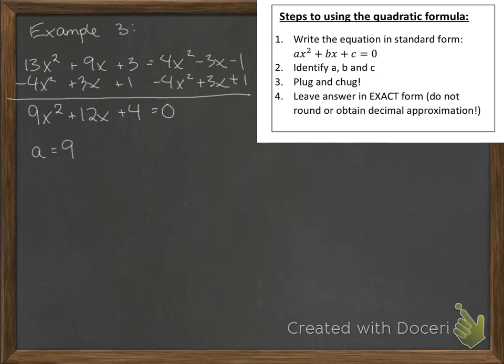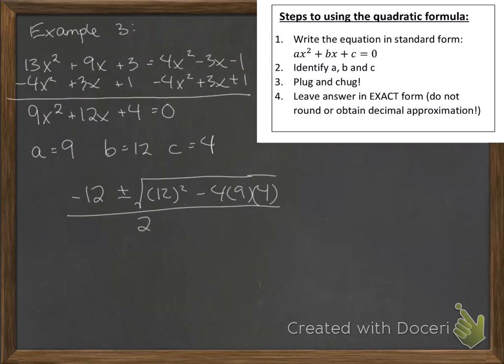So we have a is equal to 9, b is equal to 12, and c is equal to 4. So we have negative 12 plus or minus the square root of 12 quantity squared minus 4 times 9 times 4 all over 2 times a.